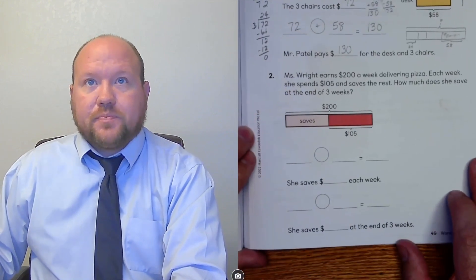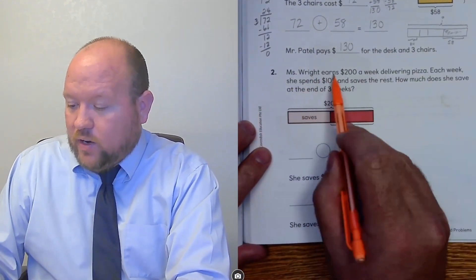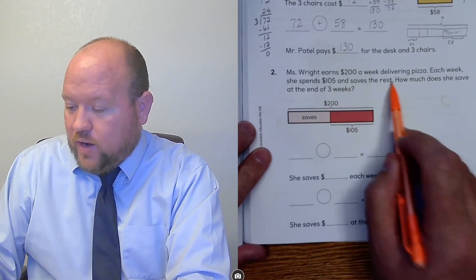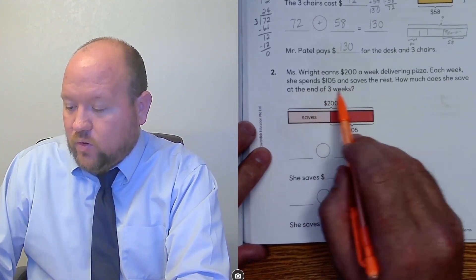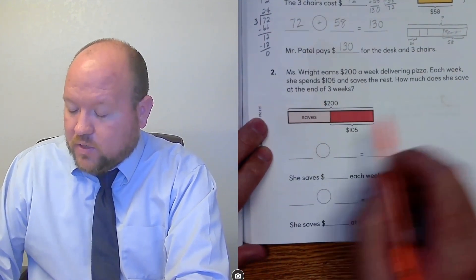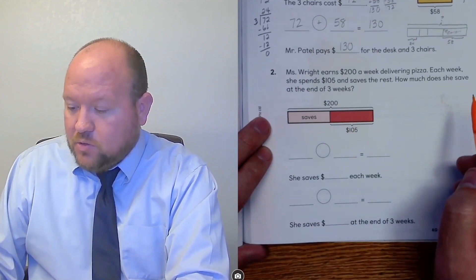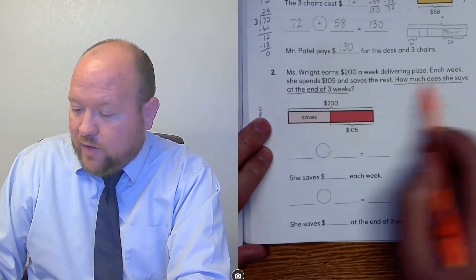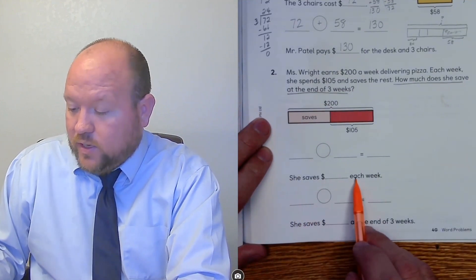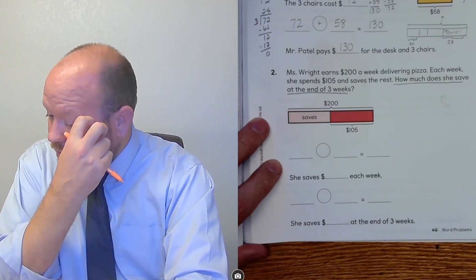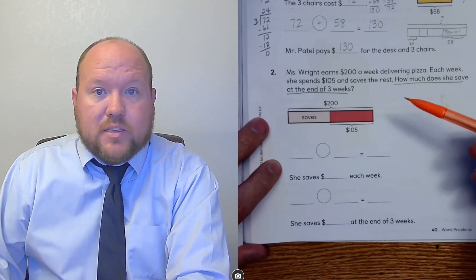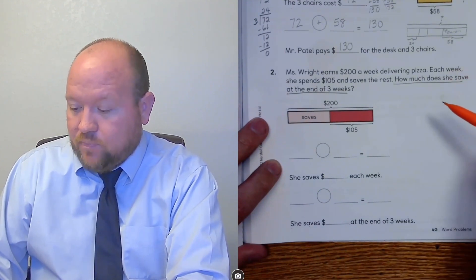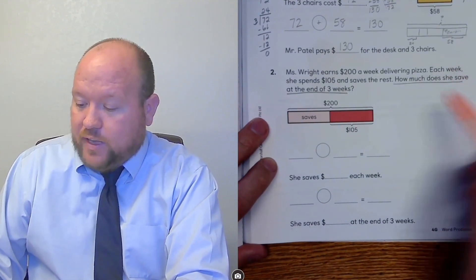Let's go to number two. Ms. Wright earns $200 a week delivering pizza. Each week she spends $105 and saves the rest. How much does she save at the end of three weeks? This one needs two bar models. First, underline the question and write the sentences: she saves blank dollars each week, and she saves blank dollars at the end of three weeks. We're not comparing, so we'll use a part-whole model. We'll use two different part-whole models to solve this.